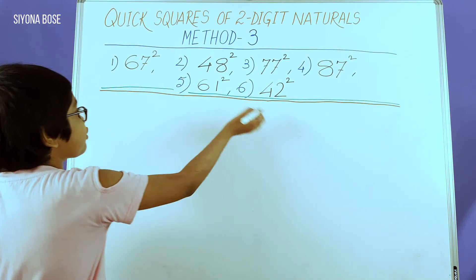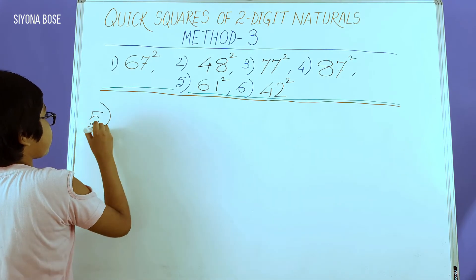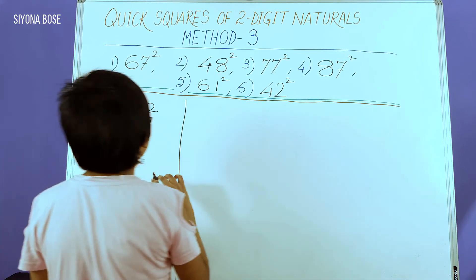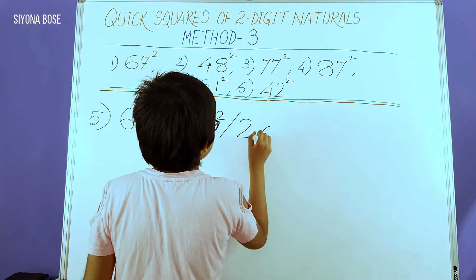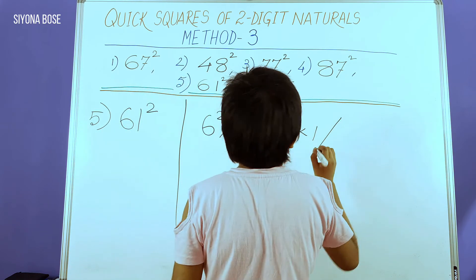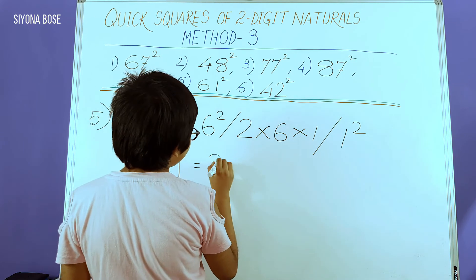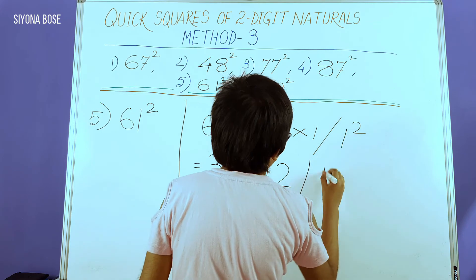Now we can move on to 61 squared. Here it's very simple: 6 squared, 2 times 6 times 1, and 1 squared. Simplifying it, we get 36, 12, and 1. Here we have nothing to add. The 4 dashes—don't forget that.